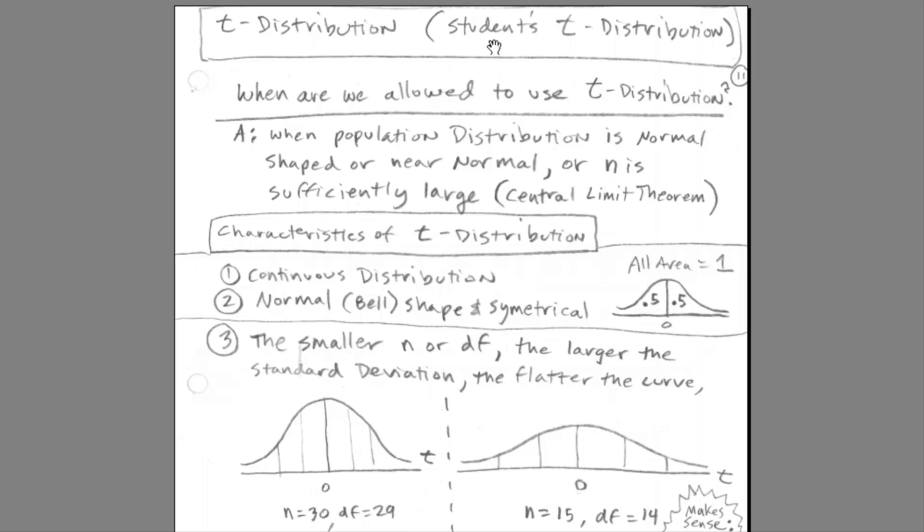Now, I'm going to go two slides ahead. t-distribution. It's also called the student's t-distribution. We first need to think about when we're allowed to use the t-distribution. You can use it when the population distribution is normal shaped or near normal, or n is sufficiently large, using the central limit theorem.